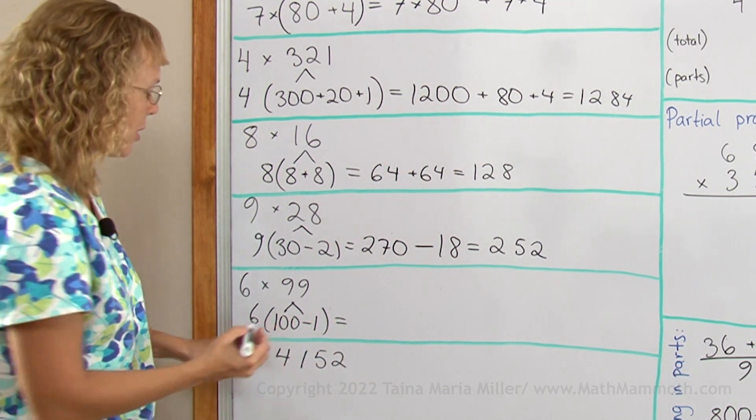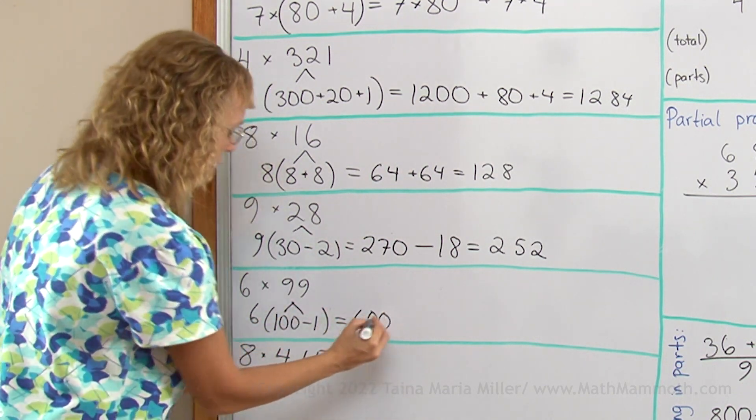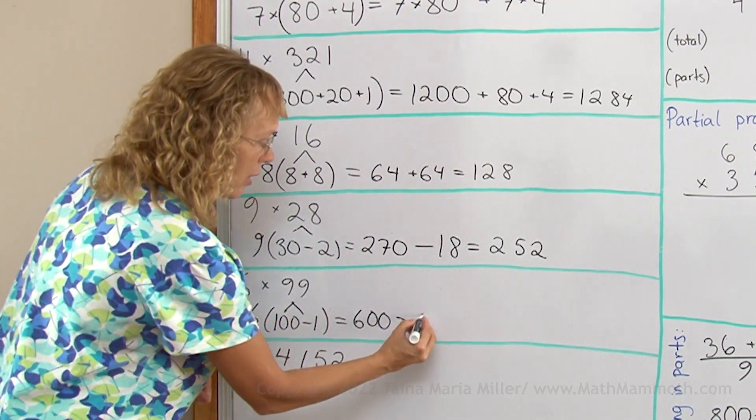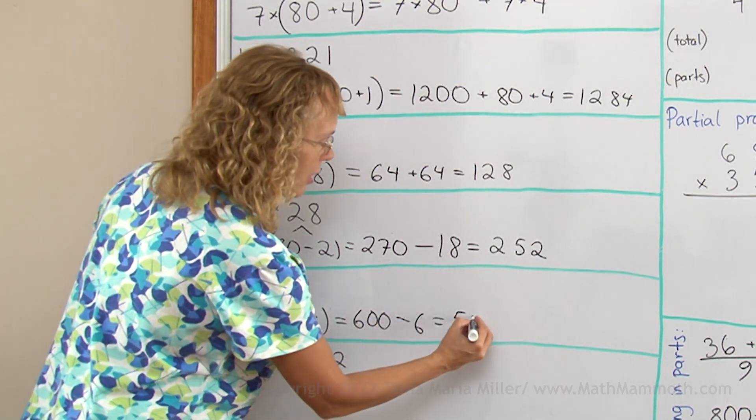And then you multiply in parts, 6 times 100, and then 6 times 1. And there's a minus there, so we get 594.